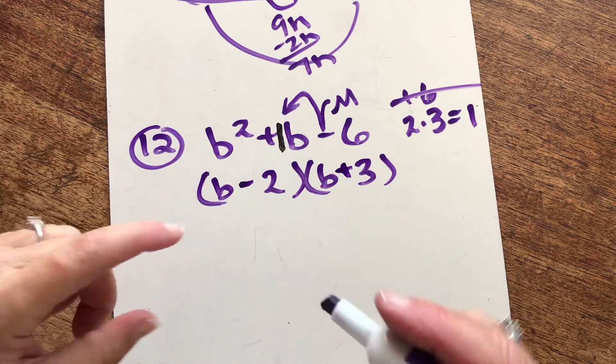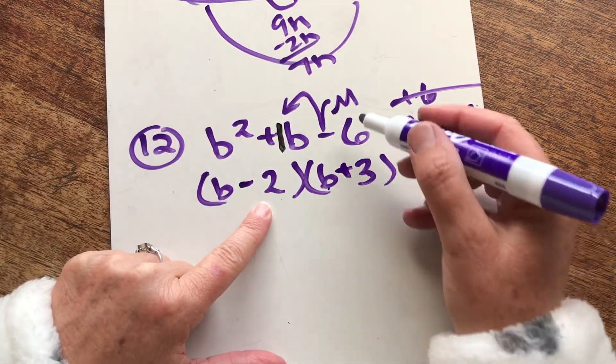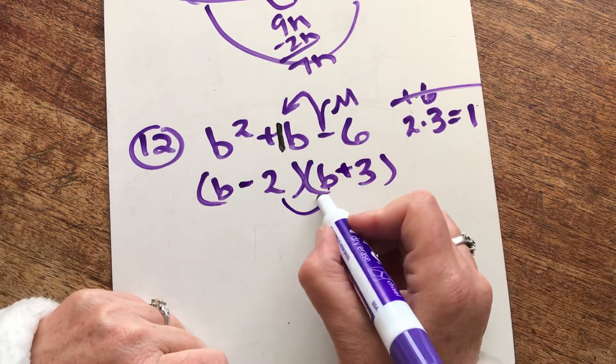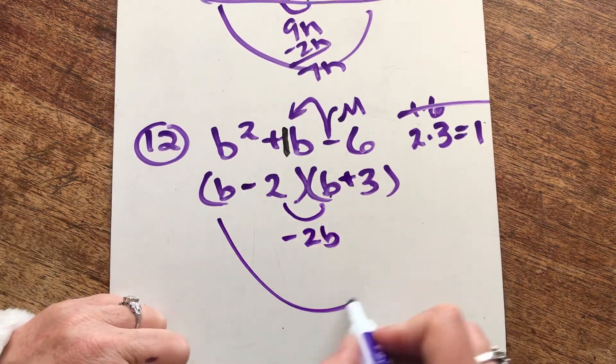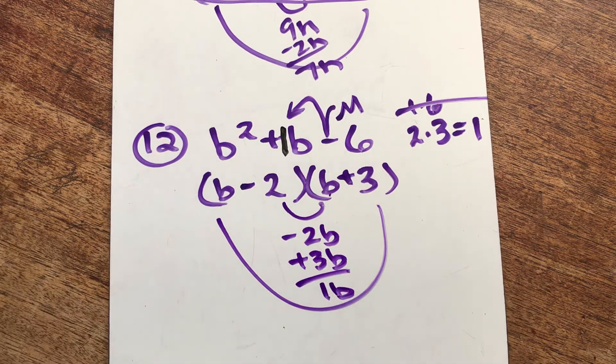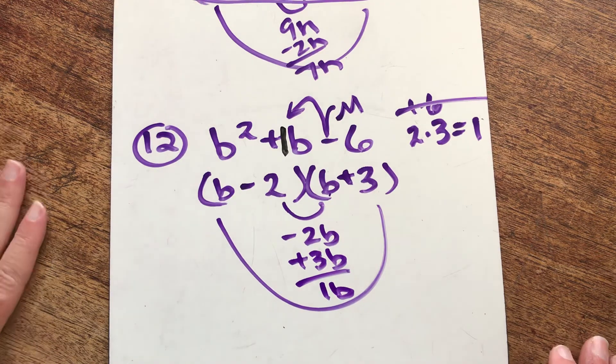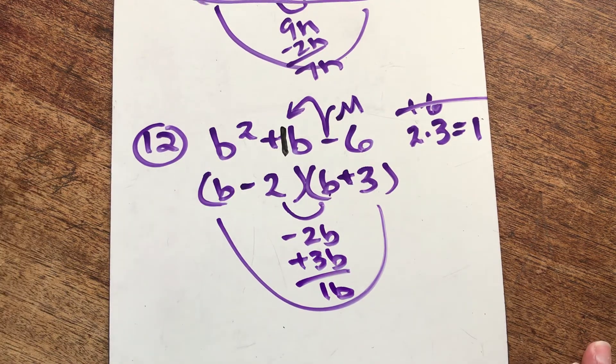And if you don't believe me, again, let's check. b times b is b squared. Negative 2 times positive 3 is negative 6. And the middle terms, let's give them a little check. 1b in the middle. Got it. So we now just finished 9, 10, 11, and 12. I'm going to stop the video here. And we're going to do the last 4.